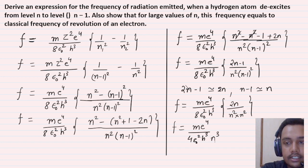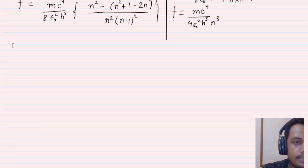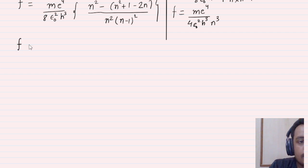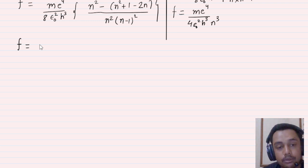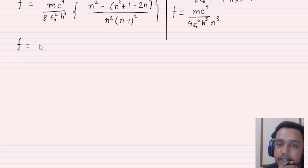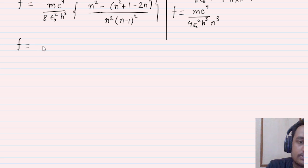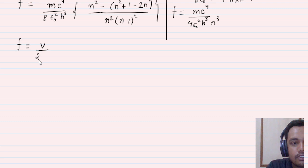Now you need to show that this equals the classical frequency. In the classical concept, the electron revolves in a circular orbit around the nucleus. The classical frequency of revolution equals velocity divided by the circumference, which equals v / (2πr), where r is the radius of the circular orbit.